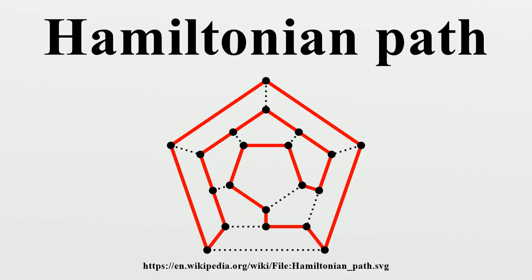Definitions: A Hamiltonian path, or traceable path, is a path that visits each vertex exactly once. A graph that contains a Hamiltonian path is called a traceable graph. A graph is Hamiltonian connected if for every pair of vertices there is a Hamiltonian path between the two vertices. A Hamiltonian cycle, also called a Hamiltonian circuit or graph cycle, is a cycle that visits each vertex exactly once. A graph that contains a Hamiltonian cycle is called a Hamiltonian graph.